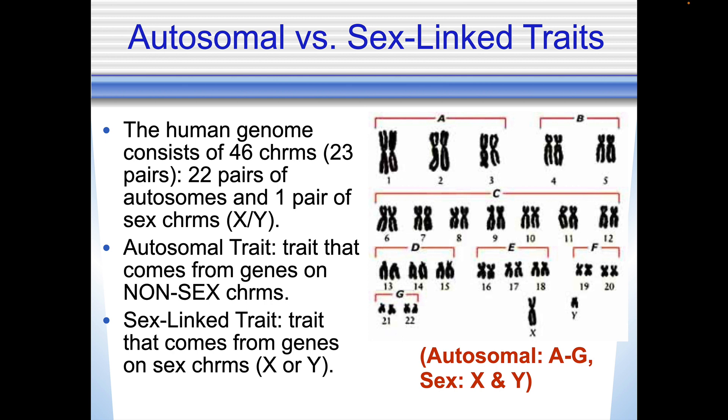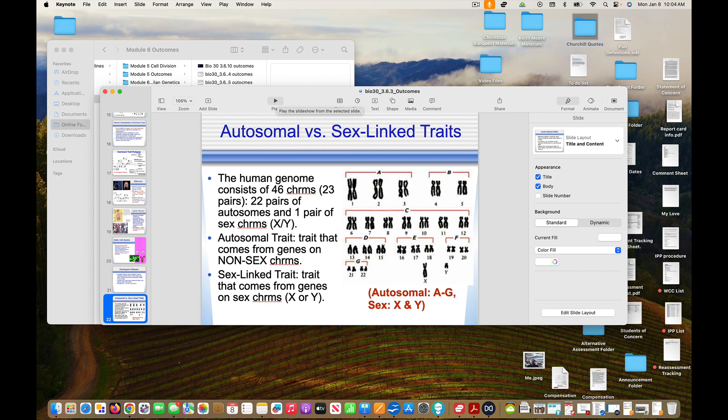There are also autosomal versus sex-linked traits. The human genome consists of 46 chromosomes — 23 pairs: 22 pairs of autosomes and one pair of sex chromosomes. An autosomal trait is a trait that comes from genes on non-sex chromosomes, chromosomes one to 22. A sex-linked trait is one that's on the 23rd pair, the sex chromosomes. And that concludes this tutorial.